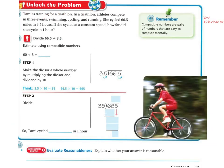Let's unlock the problem. Tammy is training for a triathlon. In a triathlon, athletes compete in three events: swimming, cycling, and running. She cycled 66.5 miles in 3.5 hours. If she cycled at a constant speed, how far did she cycle in one hour? So we're going to divide 66.5 by 3.5 hours.